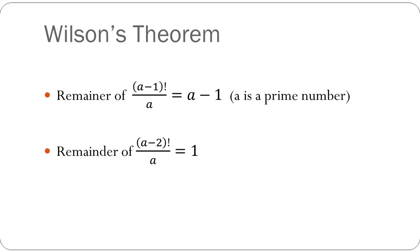Now, the general format of Wilson's theorem is as stated. Suppose you're asked to find the remainder of (a-1)! upon a, then the answer is a-1. Suppose you're asked to find the remainder of (a-2)! upon a, then the answer is 1. The only thing to remember here is that a shall always be a prime number.